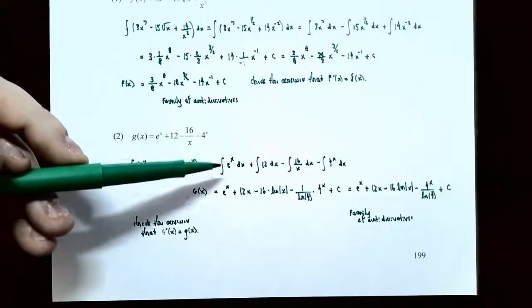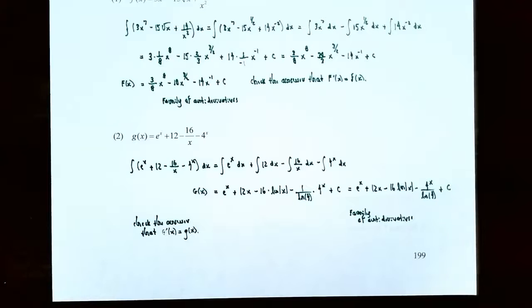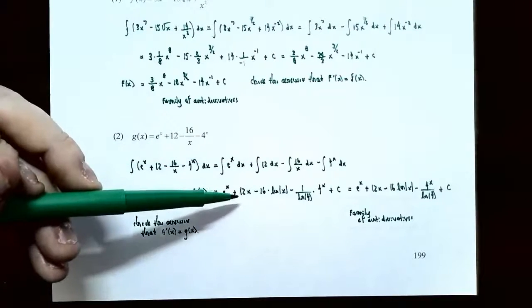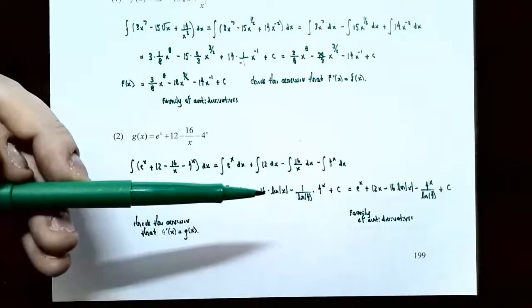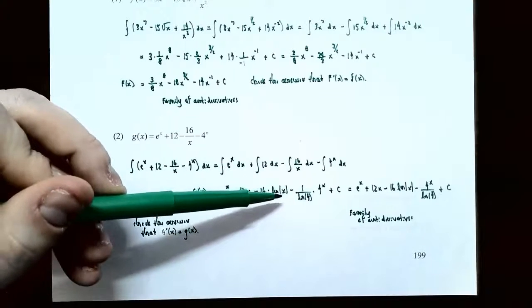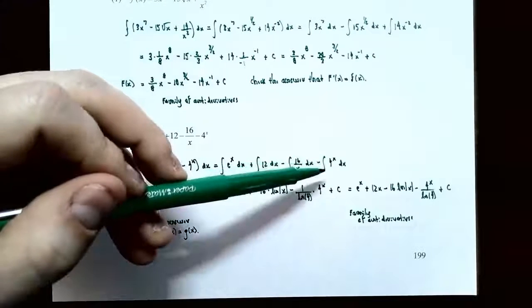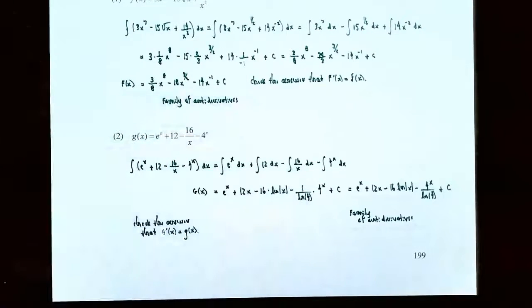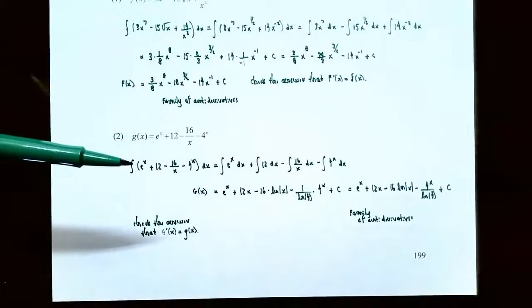The antiderivative of e^x is e^x, since the derivative of e^x is e^x. The antiderivative of 12 is 12x. The coefficient 16 stays, and the antiderivative of 1/x is natural log of |x|, giving −16 ln|x|. The last term 4^x is an exponential function with base 4, so its antiderivative is 4^x divided by natural log of 4, plus C.